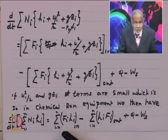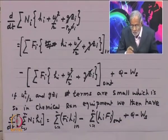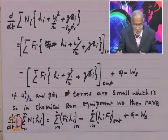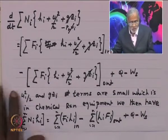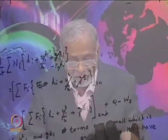What we have done is start with the general statement of conservation of energy, made certain simplifications, and written our equations in terms of enthalpy, which is a well-tabulated quantity. On the left-hand side is n_i*h_i summed over all species; on the right-hand side, F_i*h_i for inflow and outflow streams, Q, and W_s.